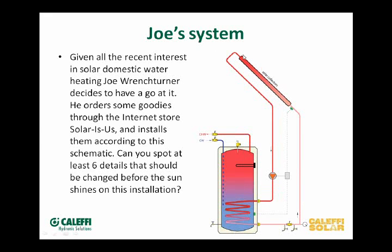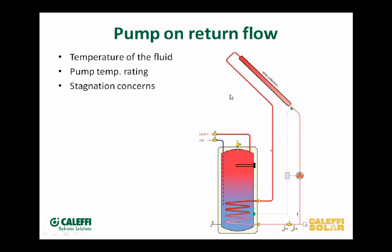In this picture here you'll notice about six mistakes. The first one is the pump on the flow. What you want to do — and here's the mistake drawing — you can see where they've got the circulator, the pump located, coming down from the collector.